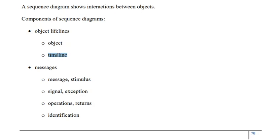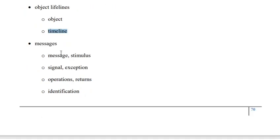The timeline is a line that runs from the beginning of the diagram at the top to the end of the diagram at the bottom, representing the time for which the object will be present or participating in the scenario. During the timeline, an object may be in active mode or passive mode. Object lifeline is the time span of the object for the execution of the scenario. Messages can be stimuli, signals, exceptions, operations, returns, or identification.